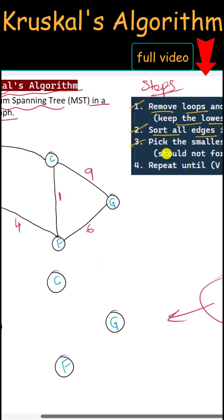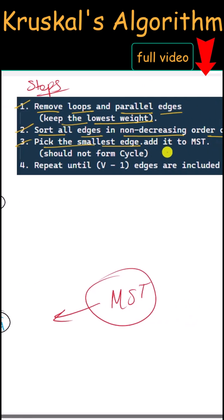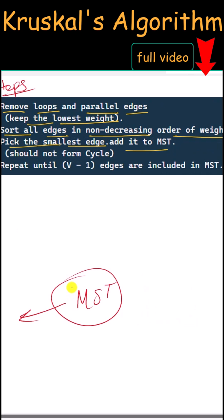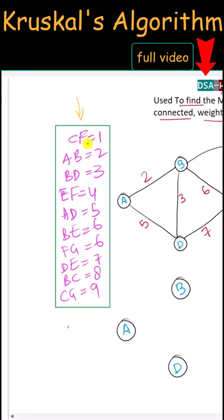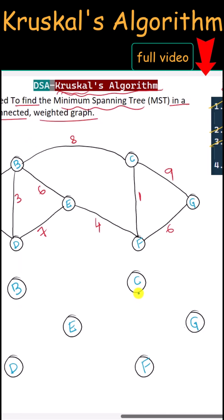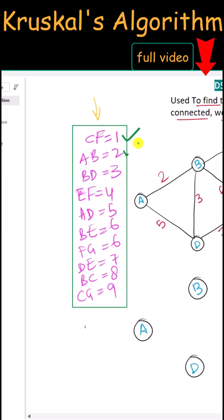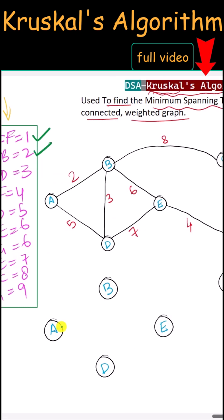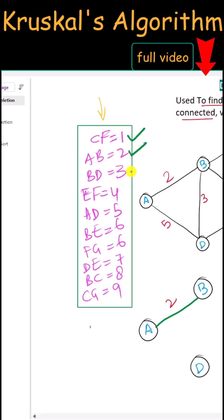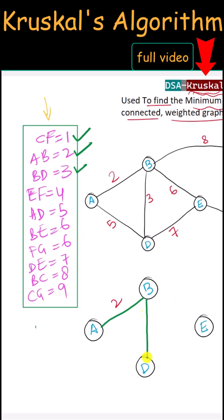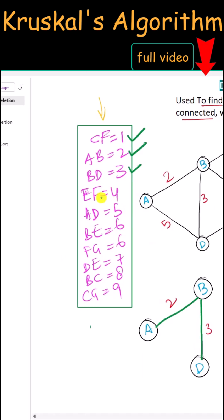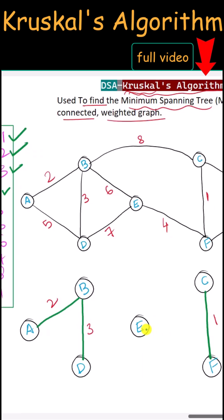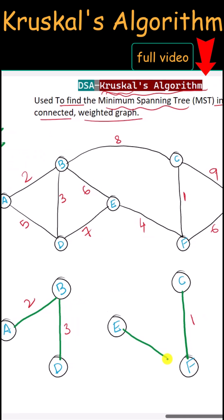Now we have to pick the smallest edge and add it to our minimum spanning tree. First we have the edge CF, so we include CF. Next we have the edge AB, so we include AB. Next we have edge BD, so we include BD. Next we have edge EF, so we include EF.